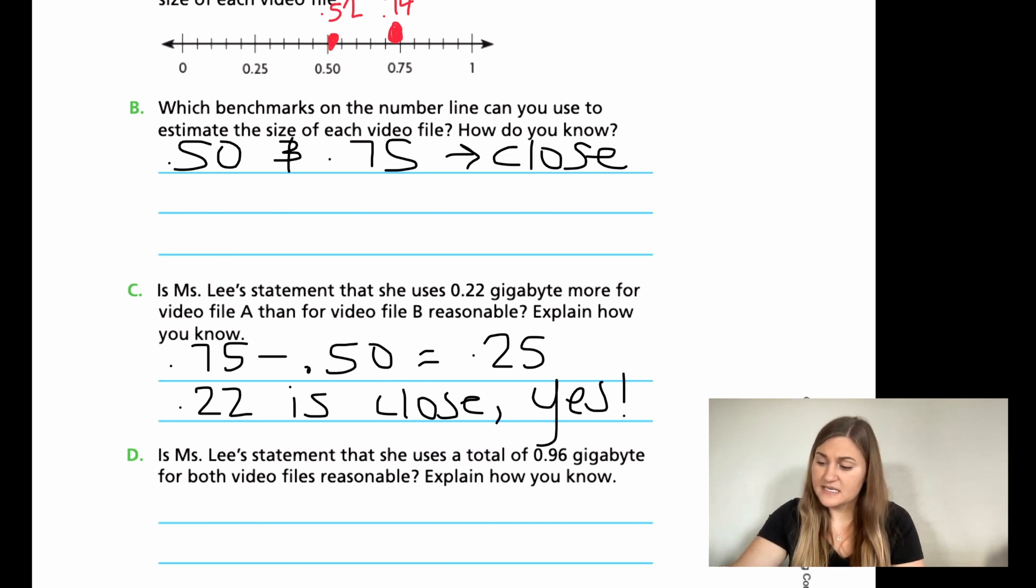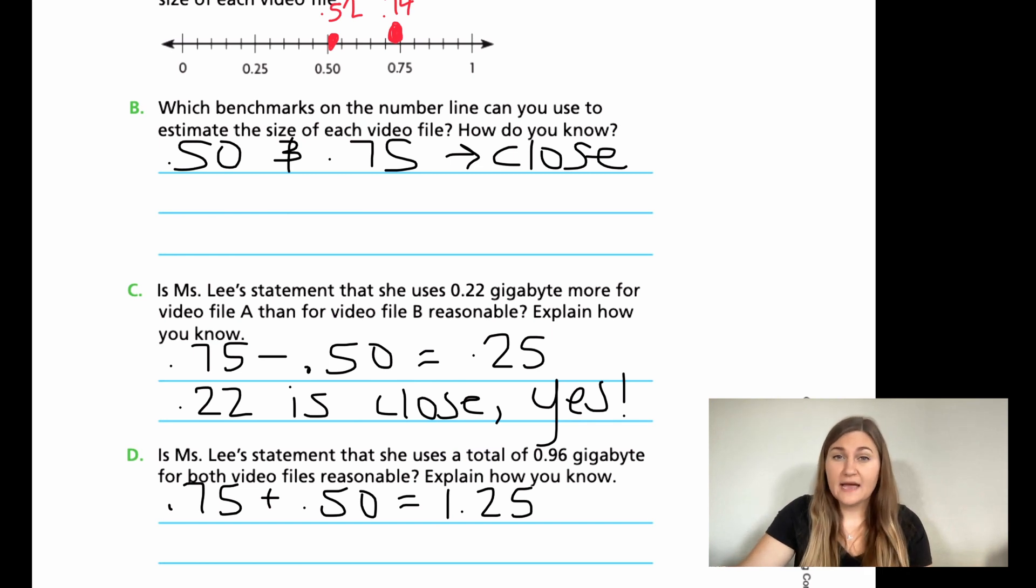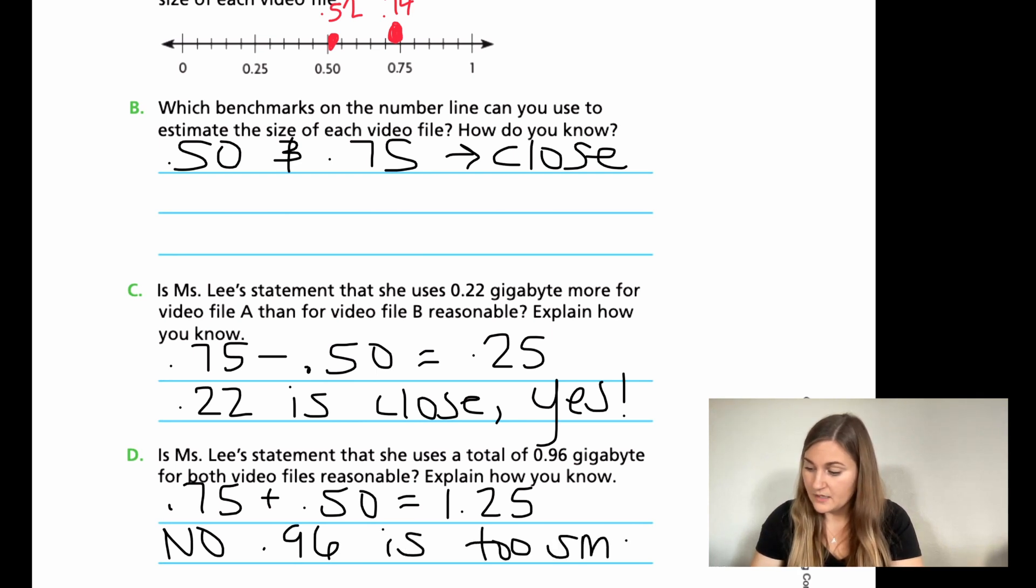Now for the last one, it says, is Ms. Lee's statement that she uses a total of 0.96 gigabytes for both video files reasonable? So this is saying total, this is adding both of them together. So again, using my benchmarks, if I had 0.75 and now I'm adding it to the 0.50, what would that be? Well, 75 plus 50, if you were going to add that, it would be 125. But since we're working with decimals, that 100 would be in the ones place. And then we would have 0.25. So it would look like this, 1.25. If you wanted to add those, line up your decimals, your 1 would carry over past the decimal. All right, so if my benchmarks say 1.25, but then my answer says 0.96, I'm going to say no, because the 0.96 is just too small. Not quite big enough for the estimate.